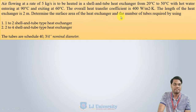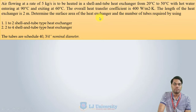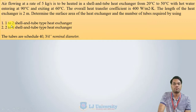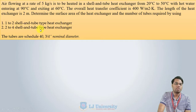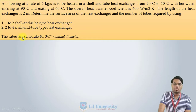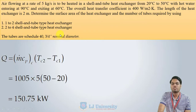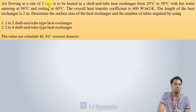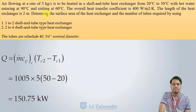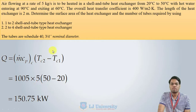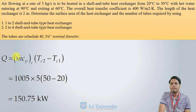We need to determine the surface area and the number of tubes required. This numerical is solved for two configurations: first, 1-2 shell and tube type, and second, 2-4 shell and tube type. Since we know TC1, TC2, and the mass flow rate of the cold fluid, we can calculate Q using the energy balance equation. We can also find the unknown mass flow rate of the hot fluid, but that is not required right now.